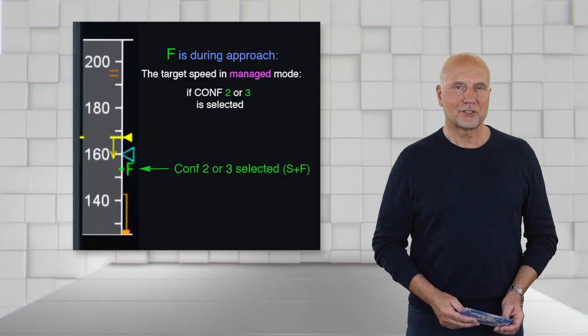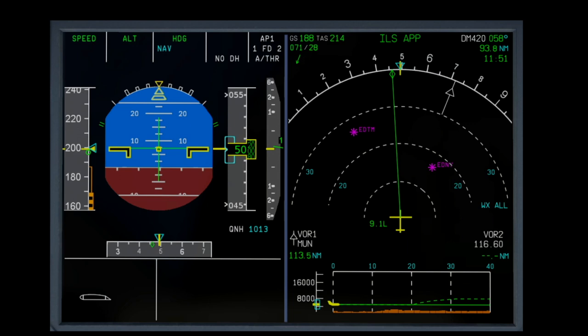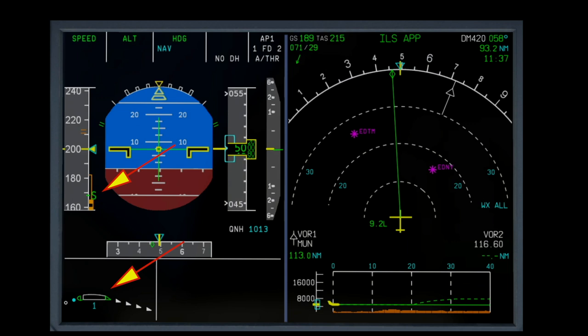Let's take a look at the whole thing in practice. We are flying with a selected speed of 200 knots just above green dot speed. Now I select config 1, we see green dot disappears, S appears. VLS and V-alpha prot reduce as the wing surface increases.